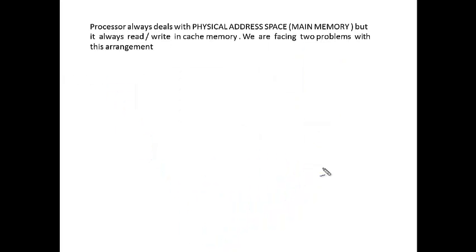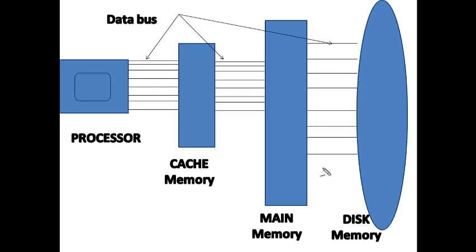The processor always deals with the physical address space, which is the main memory address space, but it always reads or writes in cache memory. For example, consider a program written in some programming language — when compiled and converted to machine language, any memory element used will be assigned addresses. These addresses are physical addresses, i.e., addresses of main memory. But the processor is always fetching or storing data from the cache memory, as there is no direct line from main memory to the processor.